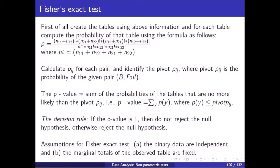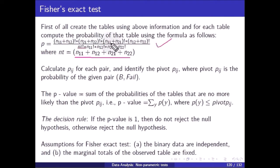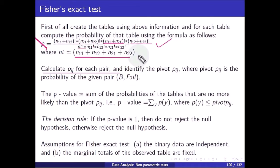For each table, compute the probability using the formula. nt is n11 plus n12 plus n21 plus n22. The p-value formula is: (nr1 factorial × nr2 factorial × nc1 factorial × nc2 factorial) divided by (nt factorial × n11 factorial × n12 factorial × n21 factorial × n22 factorial). Calculate p_ij for each ordered pair.